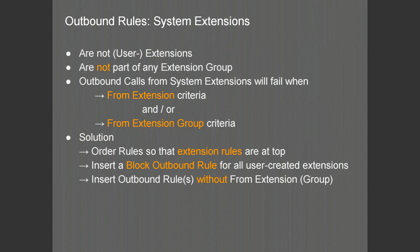The system extensions of the PBX are not user extensions. They do not have a phone provisioned on them and they are not part of any extension group in the PBX. For outbound calls from system extensions when you have extension criteria or extension group criteria defined, the PBX will look for rules which do not have extension restrictions defined. The solution is to order your rules so any extension-specific rules are at the top of the list, then insert a blocking outbound rule for all user-created extensions underneath, followed by rules without extension or extension group restrictions.